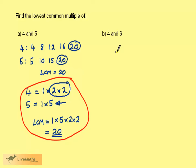So let's consider 4 and 6. 4 could be written as 1 times 2 times 2, and 6 can be written as 1 times 2 times 3.